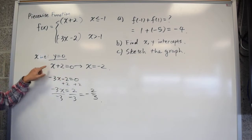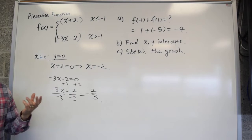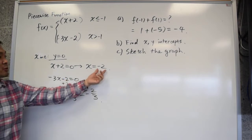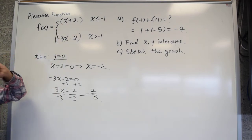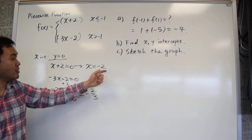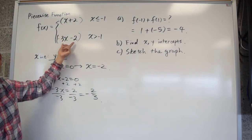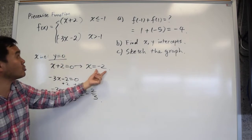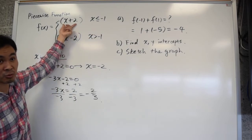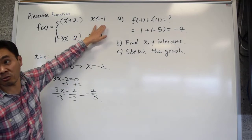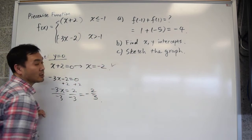Now, be careful — this calculation means that if you plug negative 2 into the function, you'd get y equals 0. But you have to check whether negative 2 actually gets plugged into the first formula. Does it satisfy the condition? Is negative 2 less than or equal to negative 1? Yes, that's true. So negative 2 is correctly evaluated by the first piece and is indeed an x-intercept.